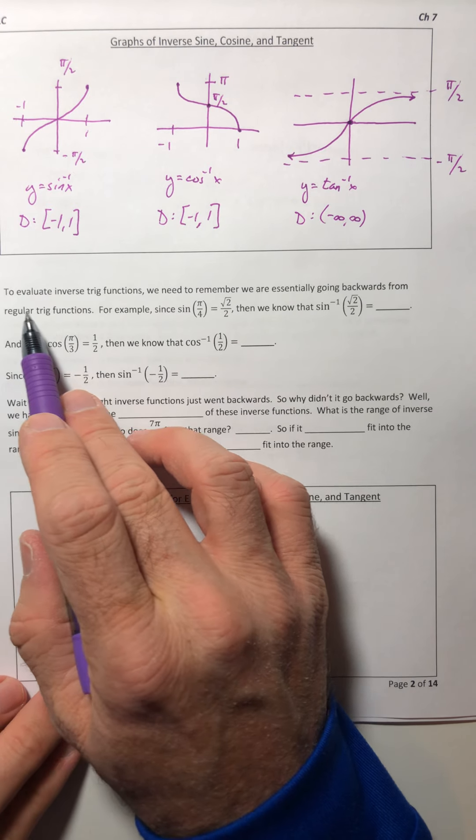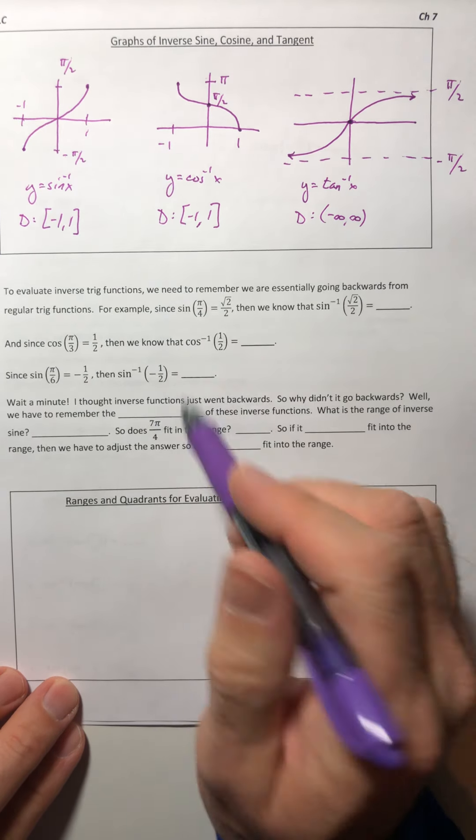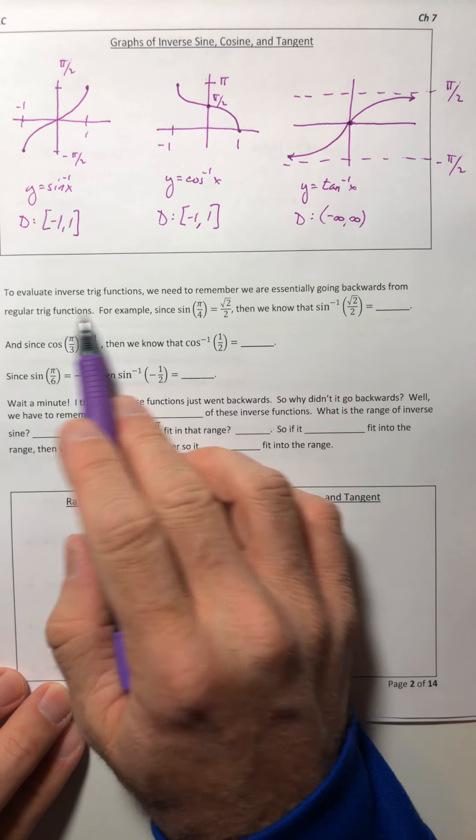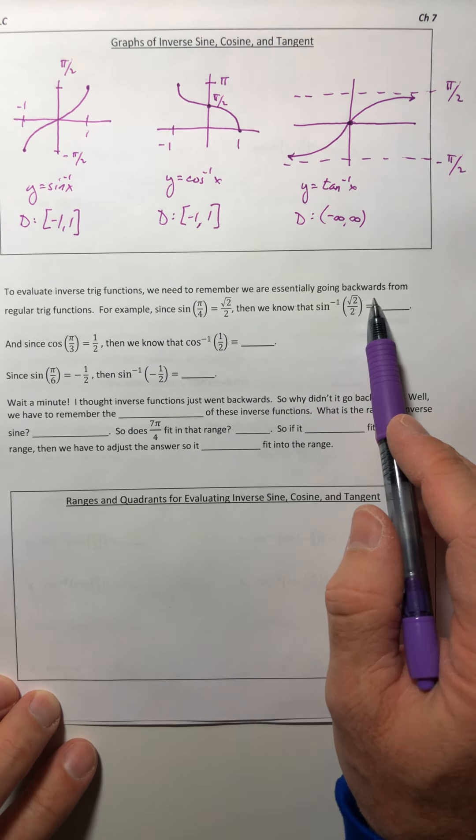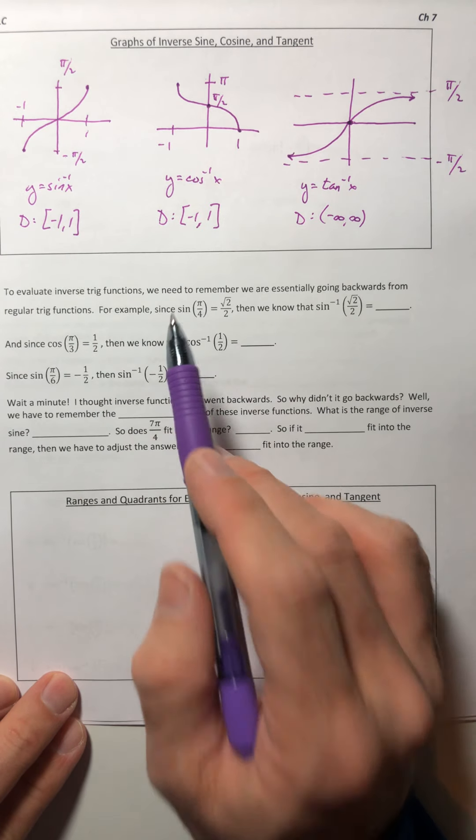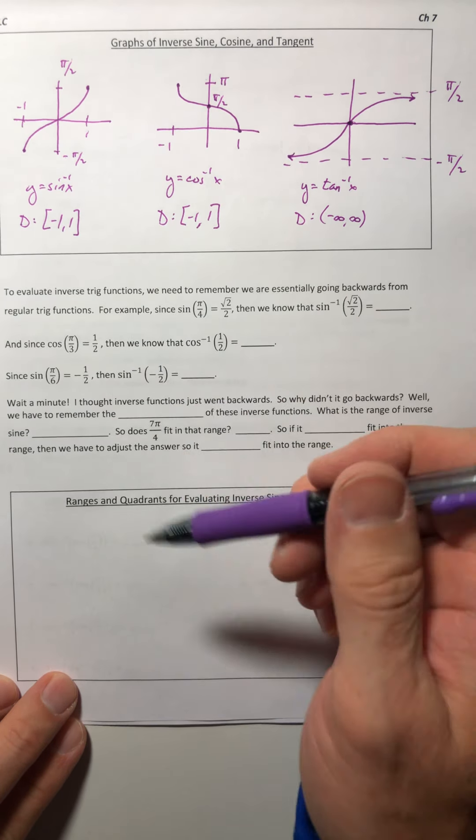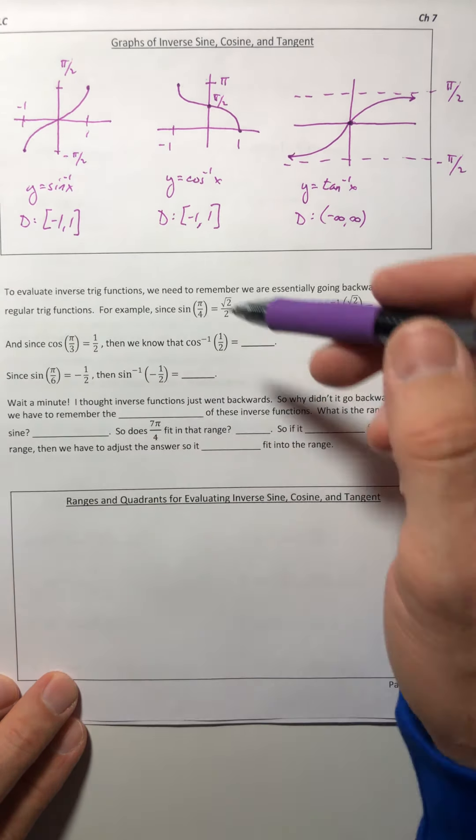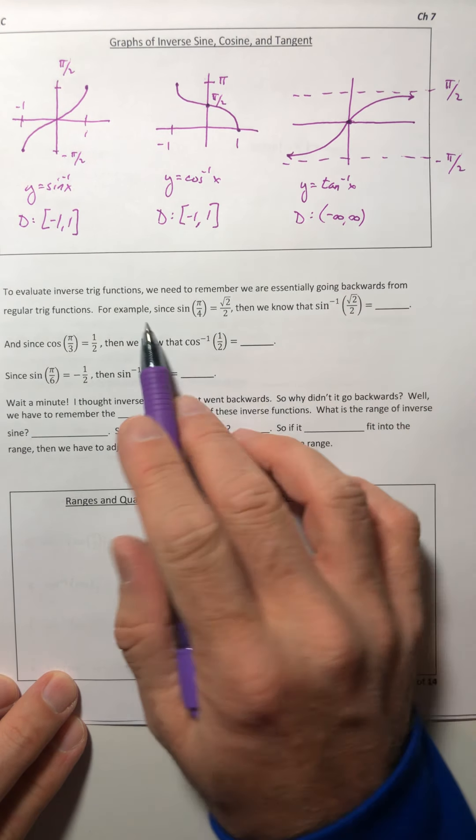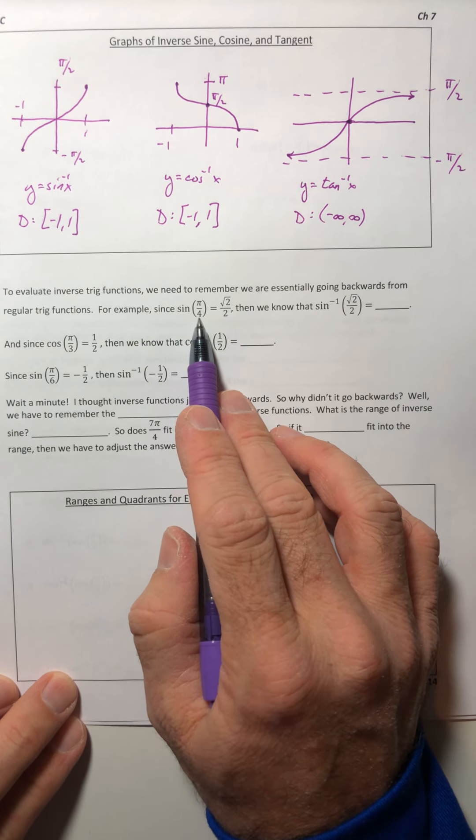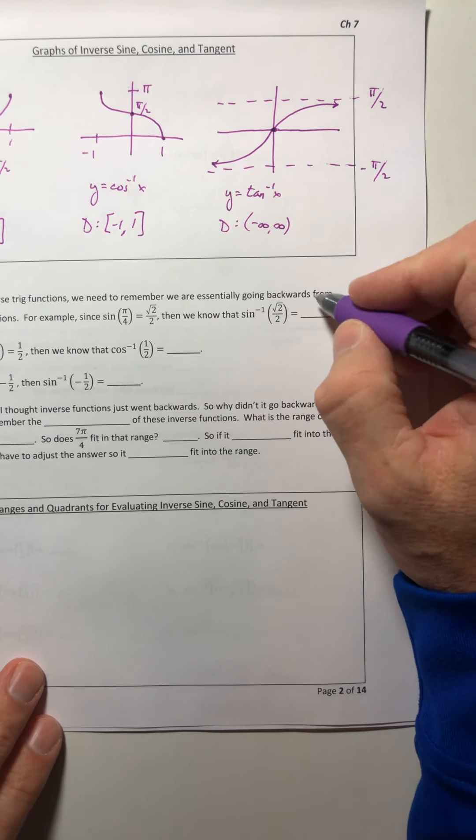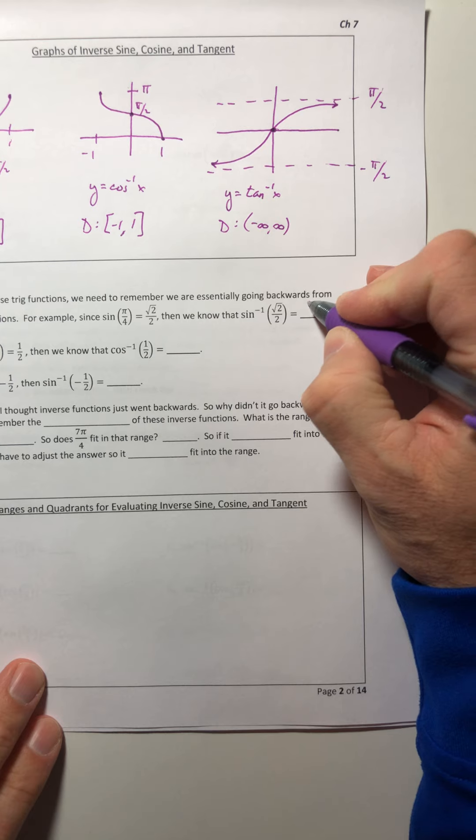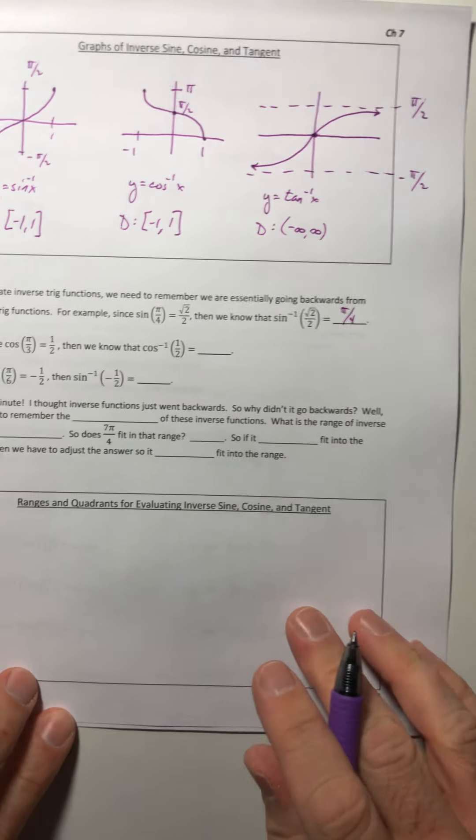Okay, so let's go ahead and look at how to evaluate these trig functions, or kind of the process to go through. So to evaluate them, we need to remember that we are essentially going backwards from regular trig functions. That's what inverse functions do. They just reverse or go backwards from a regular function. So for example, since sine of π over 4 equals root 2 over 2, then we know that inverse sine of root 2 over 2 equals π over 4.